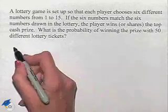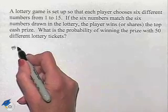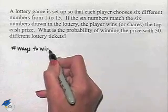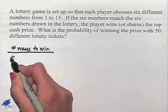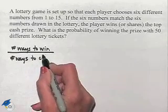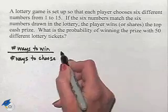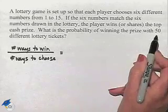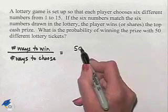We're going to have a fraction where the numerator will give us the number of ways to win and the denominator will be the number of ways to choose. Since the player is going to have 50 different lottery tickets, there will be 50 different ways to win.